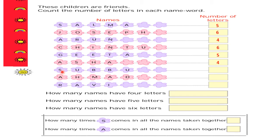Now S-U-B-B-U, that is Subbu. Let's count the letters: one, two, three, four, and five — there are five letters. Now A-H-M-A-D, that is Ahmad. Let's count the letters: one, two, three, four, and five. So let's write five letters.